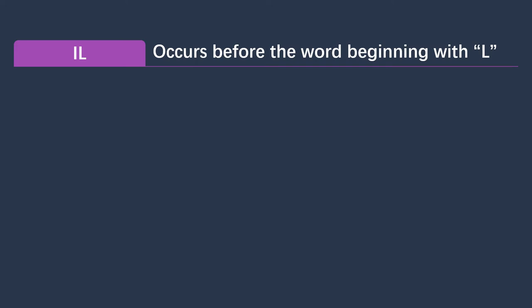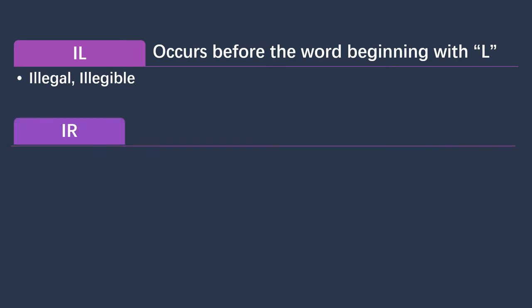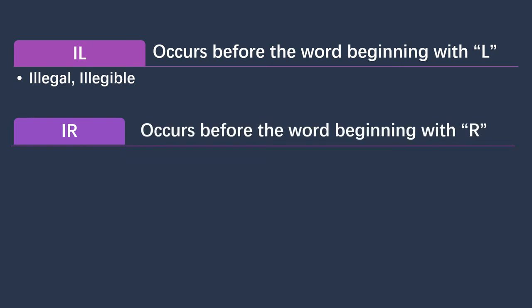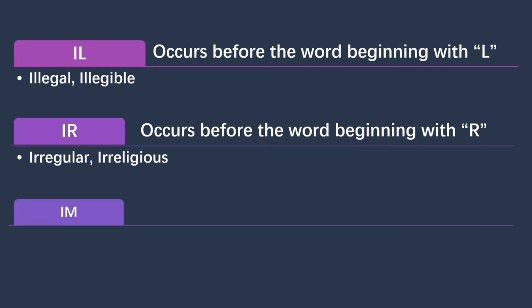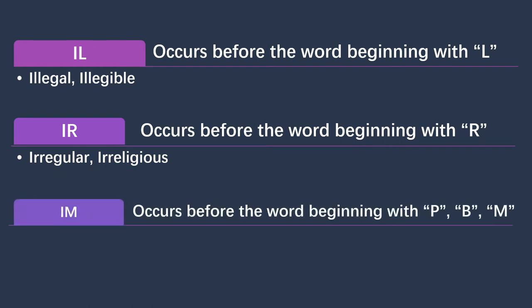The second negative prefix is 'il,' which mostly occurs before words beginning with 'l.' For example, adding 'il' to 'legal' gives 'illegal,' and another example is 'illegible.' The third negative prefix is 'ir,' which mostly occurs with words beginning with 'r,' like 'irregular' and 'irreligious.' The fourth is 'im,' which mostly occurs with words starting with 'p,' 'b,' or 'm.'